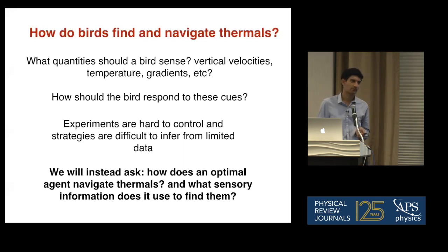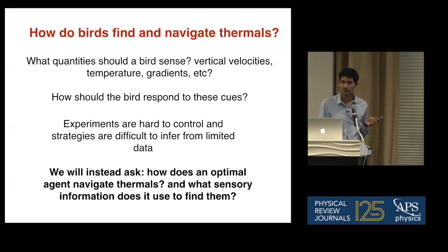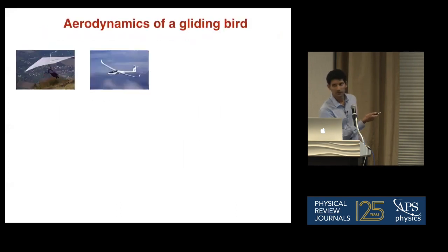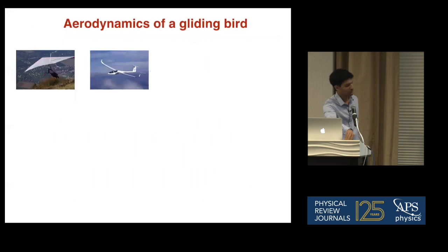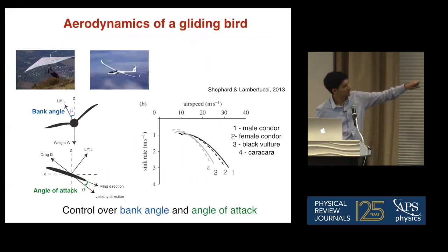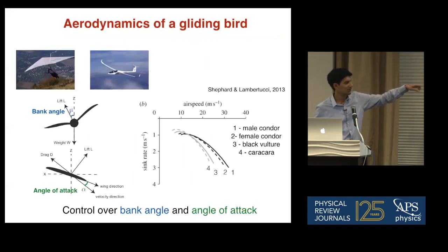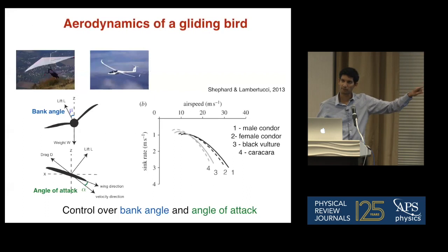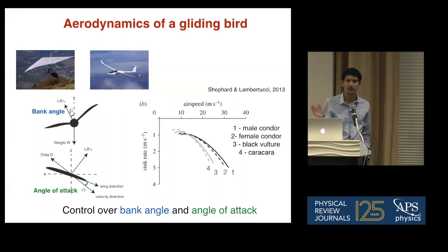In order to use this approach, we have to define our environment, the physics of the agent, and then teach it to navigate thermals. The aerodynamics of a gliding bird is very similar to that of a hang glider or sailplane — it's pretty well understood. Essentially, you have two ways to control the glider: the bank angle, which controls where you're headed, and the angle of attack, which controls how fast you sink relative to how fast you move. Each bird has a different polar curve, and by modulating the angle of attack you can choose your speed and sink rate. We give our agent these two controls.